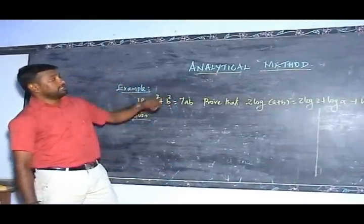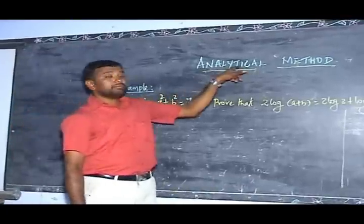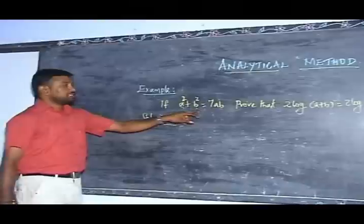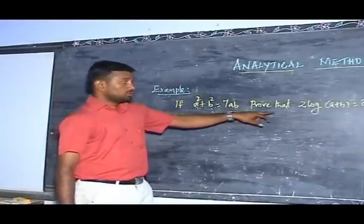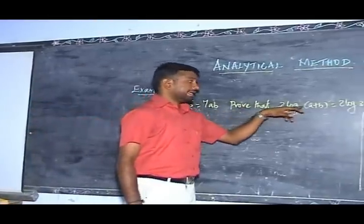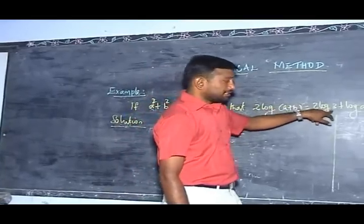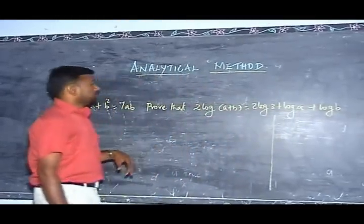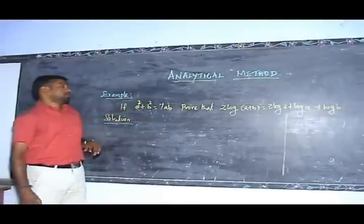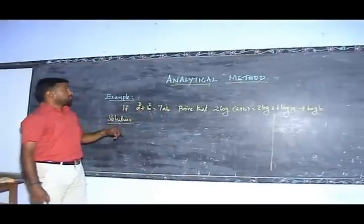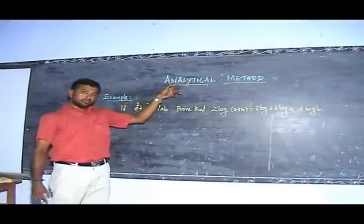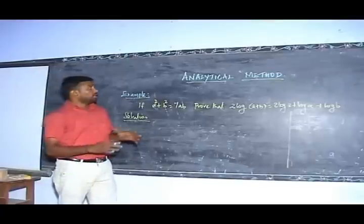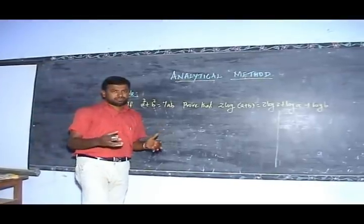Now I am going to teach Example 2 of the analytical method. If A squared plus B squared is equal to 7AB, prove that 2 log A plus B is equal to 2 log 3 plus log A plus log B. I prove this example by using the analytic method, which means analysis — breaking up.